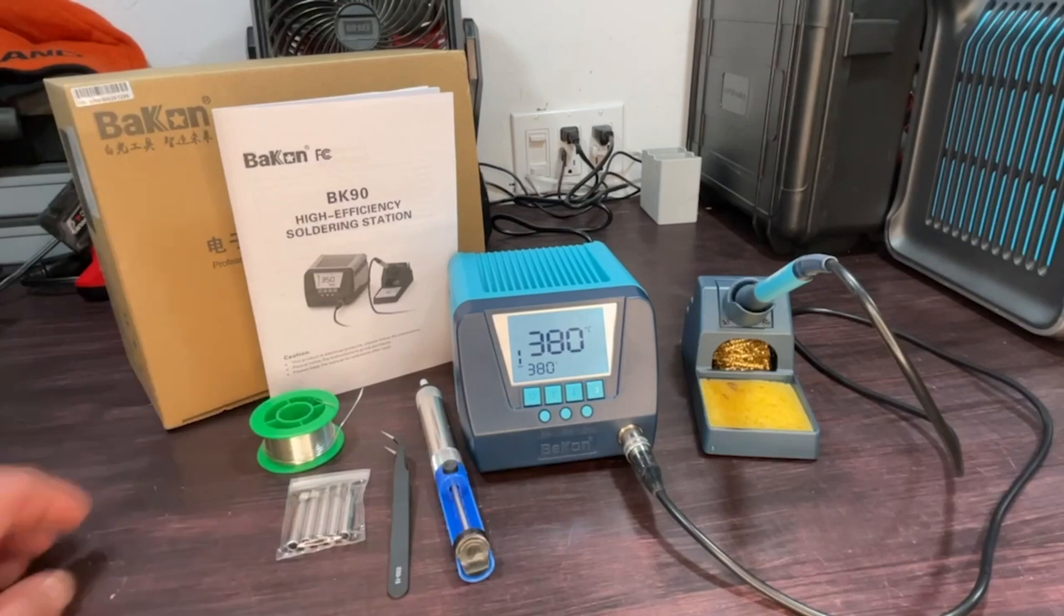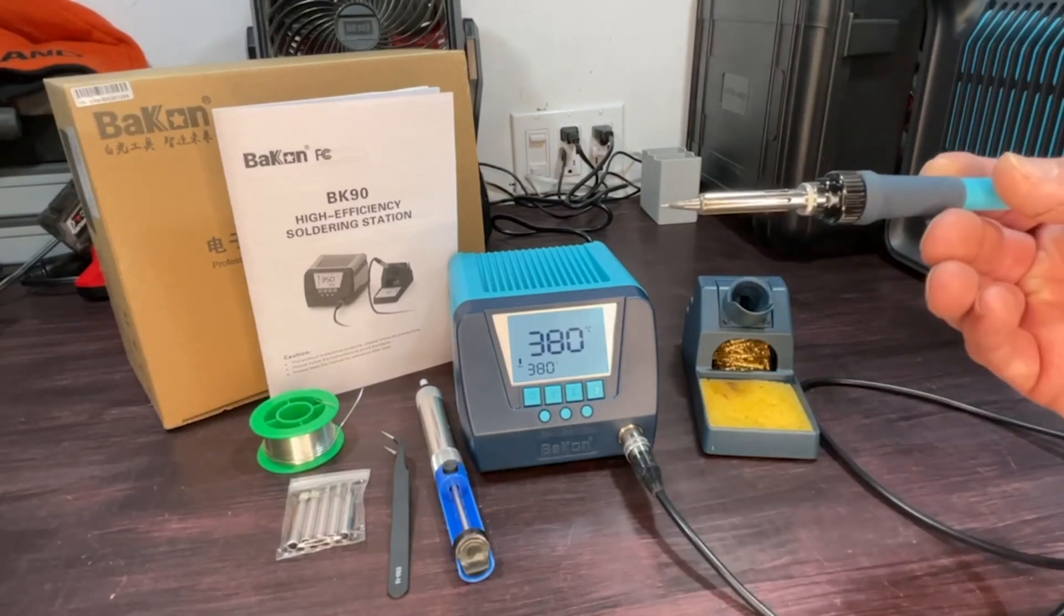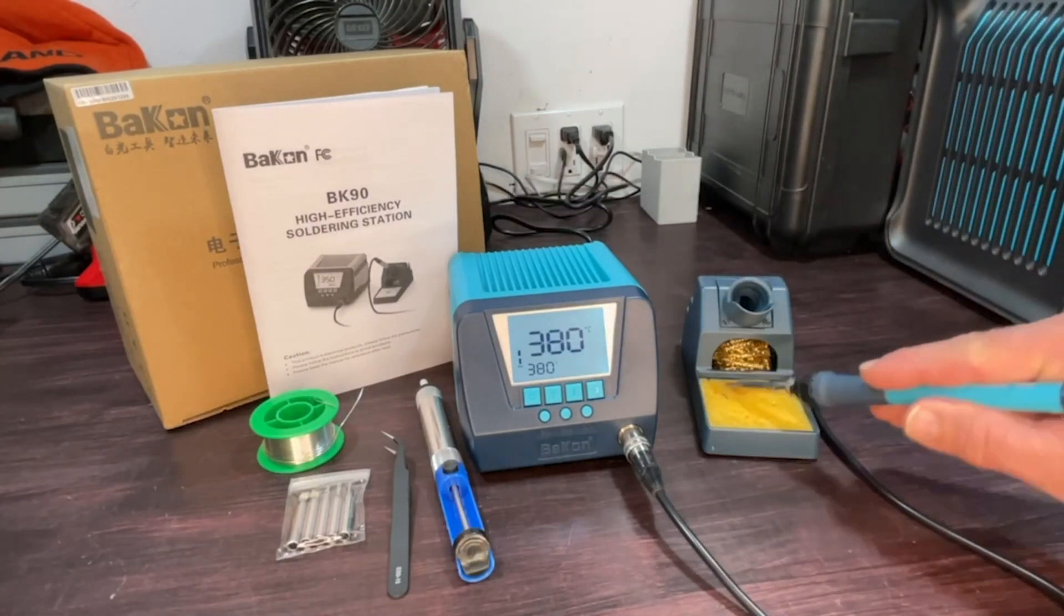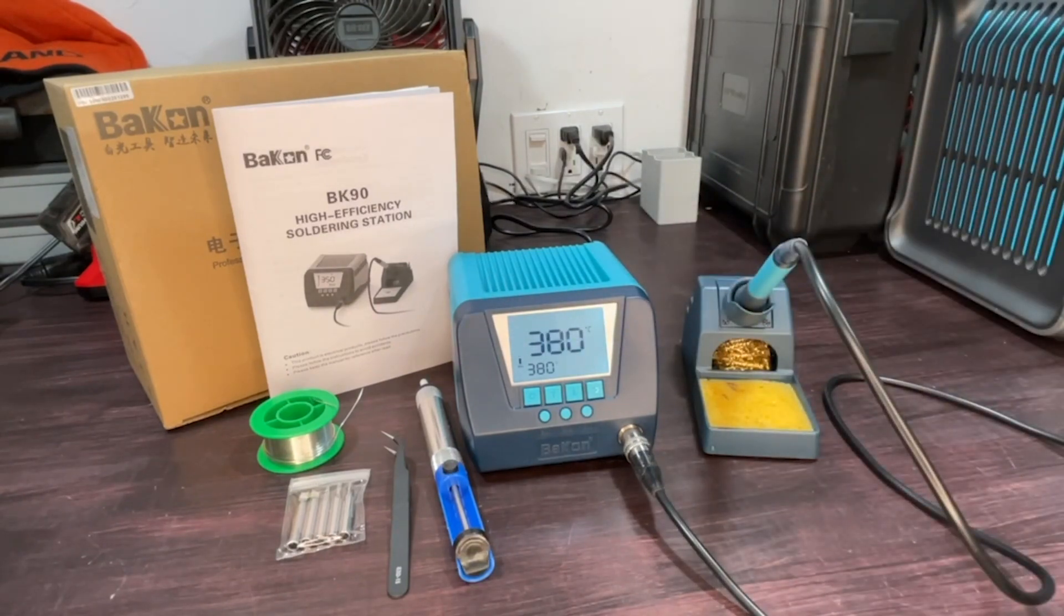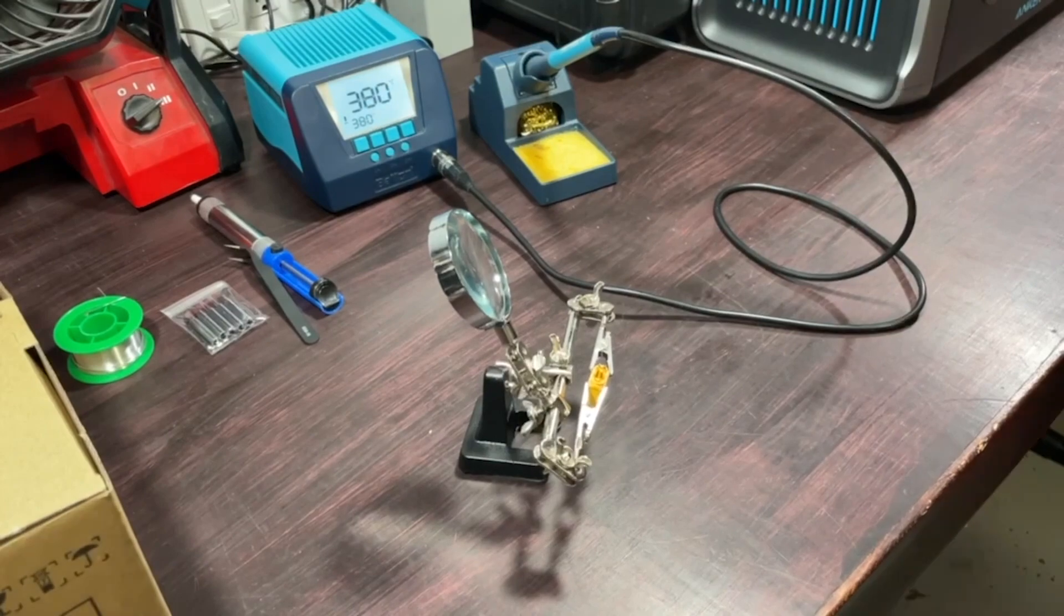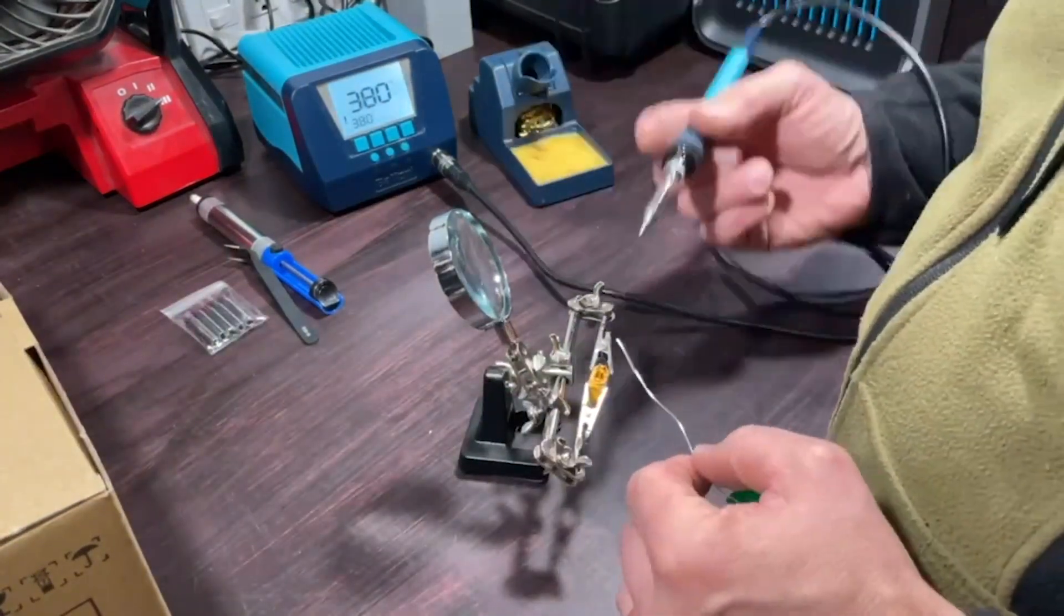The sponge and metal foil allow you to clean off your tip between use. This machine has some really great built-in safety features as well. You can password protect it, and you can even have it set up to auto shut off at different times.